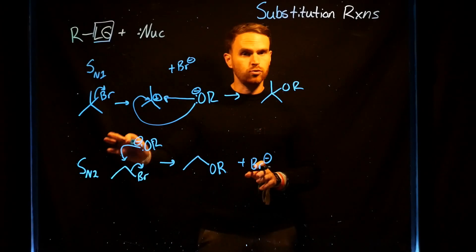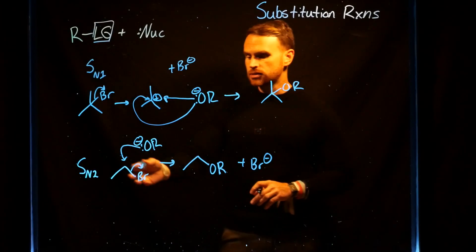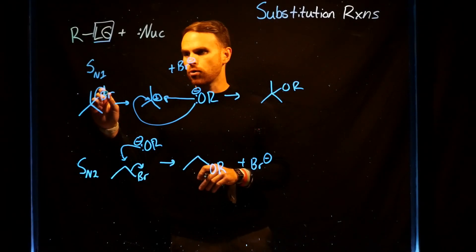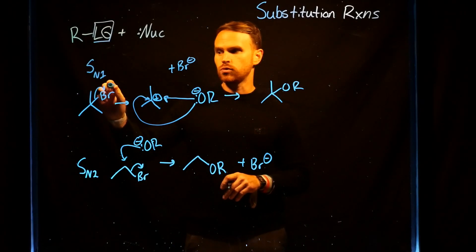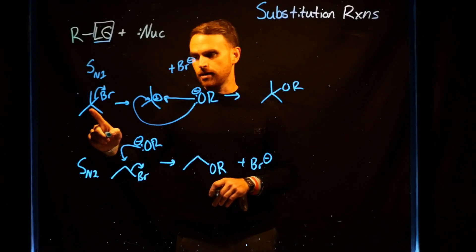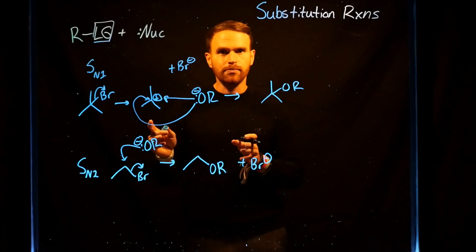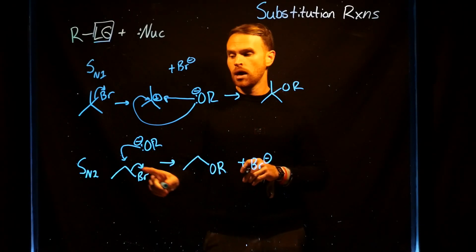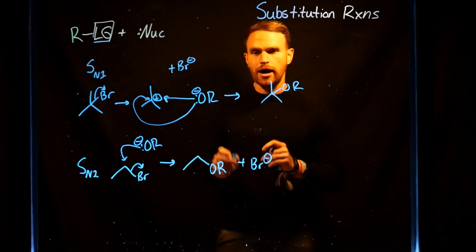Both of these pathways allow you to substitute different functional groups with nucleophiles. Notice that the important differentiation between the two is that for an SN1 reaction, you typically have to have a very stabilized carbocation formed as an intermediate in this reaction mechanism, whereas for an SN2 reaction, they both happen simultaneously.